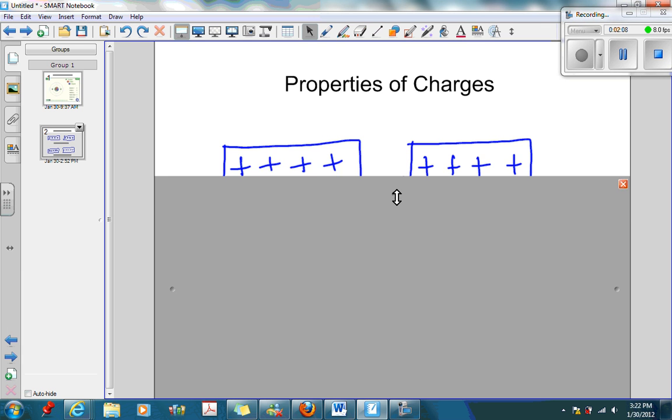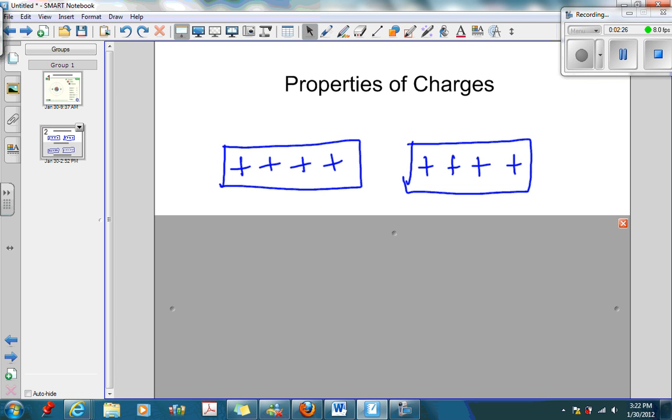Suppose I bring two charged objects closer to each other, let's say two objects of the same charge, in this case positive and positive. What would happen? When I bring both objects closer together, these objects repel each other because like charges repel.